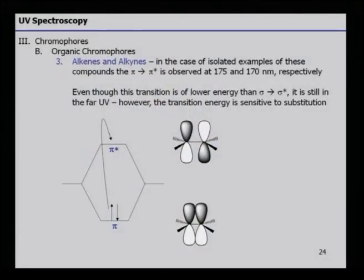If there is an organic chromophore which has alkenes or alkynes, one can expect that the pi to pi* transition is possible. For a simple alkene with one isolated double bond, it will range from 170 to 175 nm, and for alkyne it is around 170 nm. Even though the transition is of lower energy than sigma to sigma*, it is still in the far UV region, though it is sensitive to substitution.